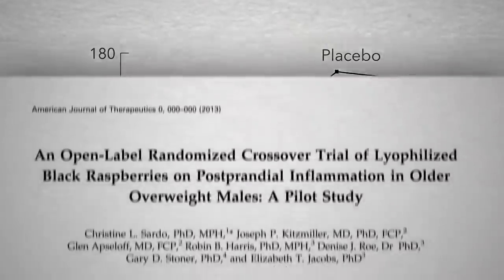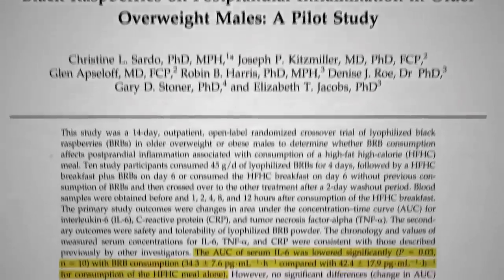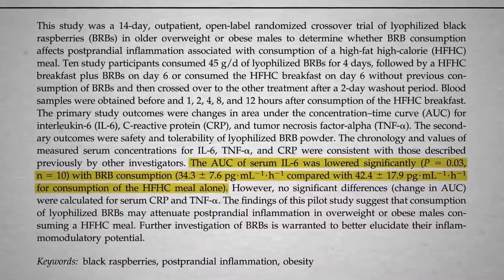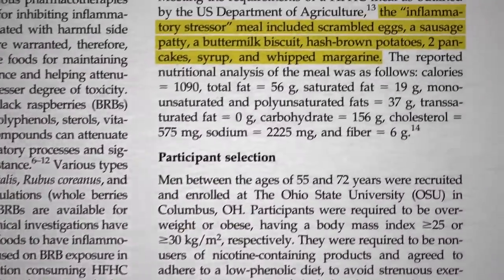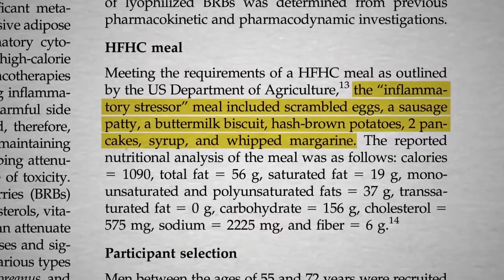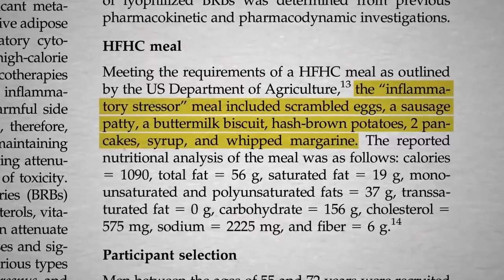And with less oxidation, there is less inflammation when berries are added to a meal. So a whole plant food source of sugar can decrease inflammation in response to an inflammatory stressor meal.